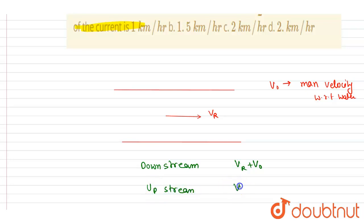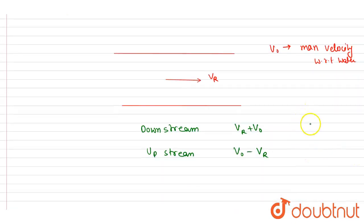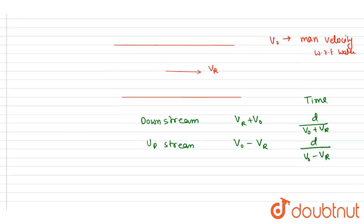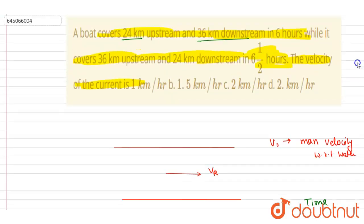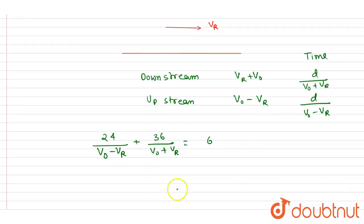In the first case, the distance upstream is 24 km and downstream is 36 km. Time taken upstream is distance divided by (v-naught minus vr), and downstream is distance divided by (v-naught plus vr). The total time for upstream and downstream travel equals 6 hours.